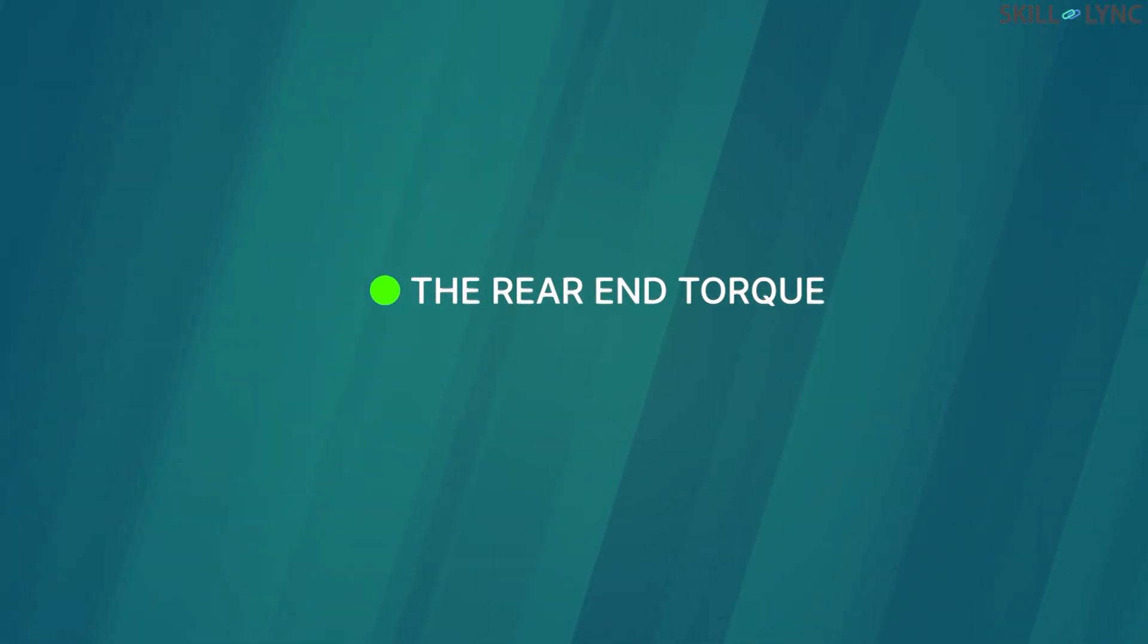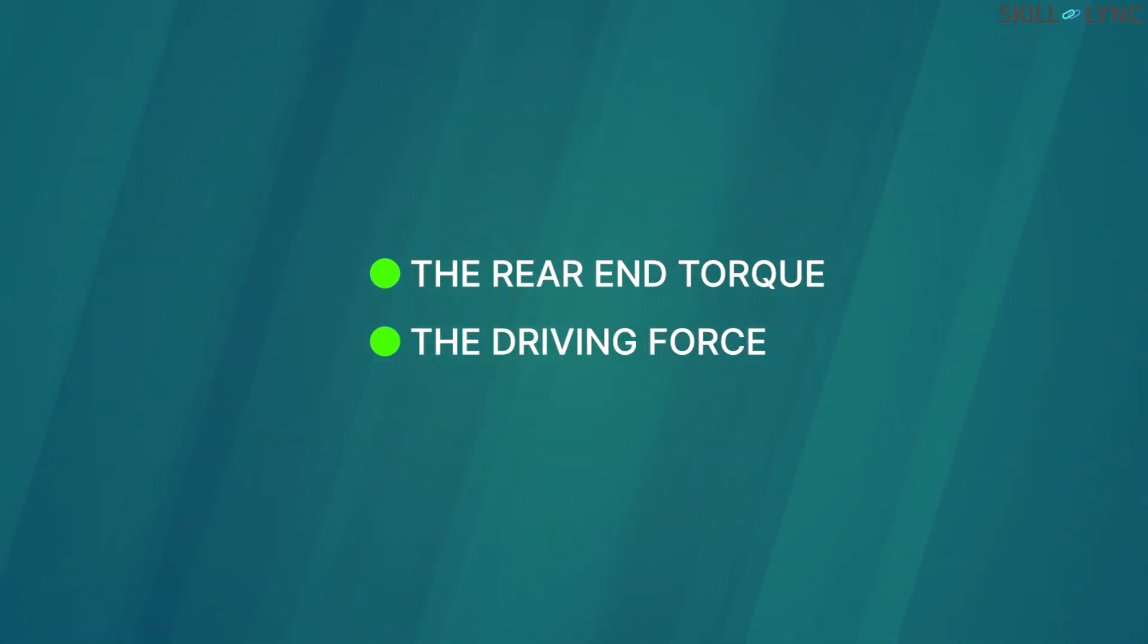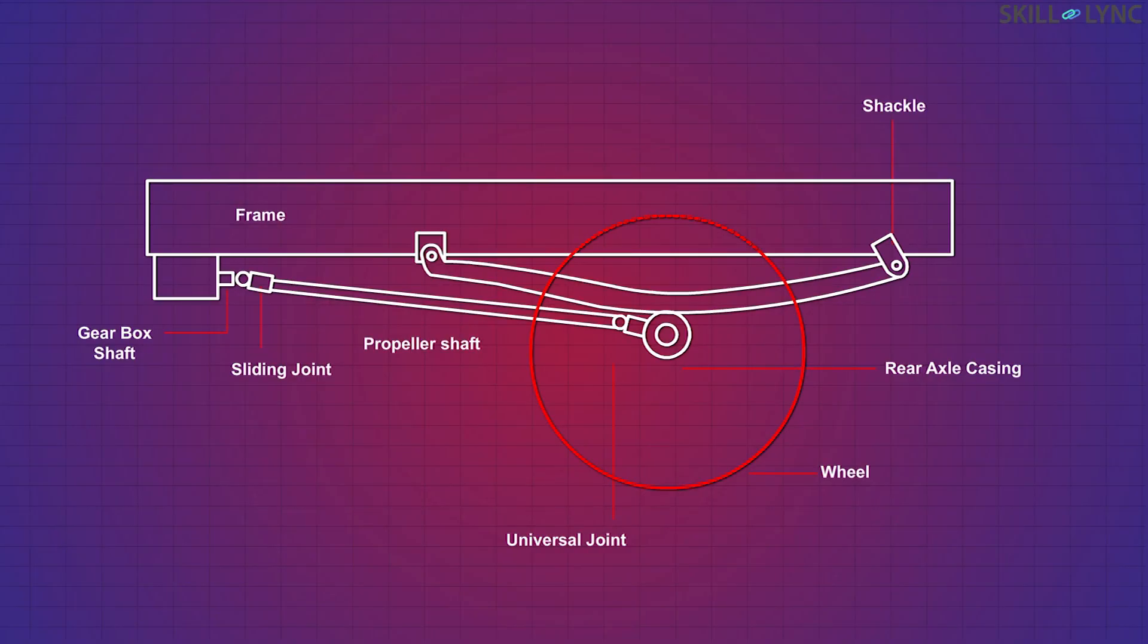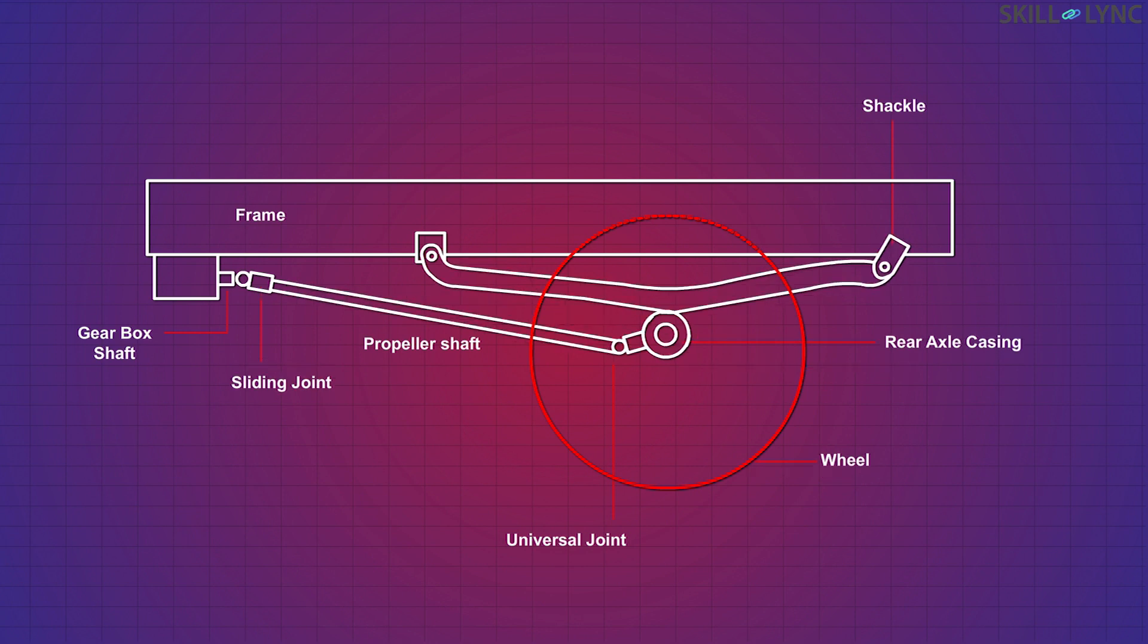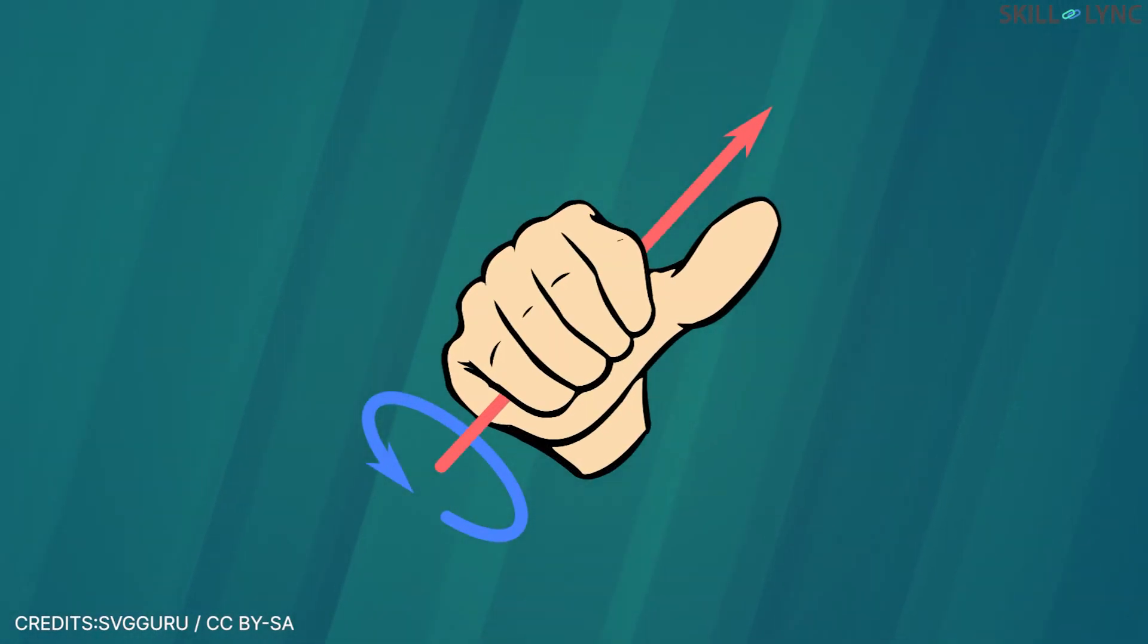When the torque acts, the leaf springs tend to bend as shown here, because the torque acts in the clockwise direction. Similarly, when the braking torque acts, the leaf springs tend to bend as shown in this picture, because the torque acts in the anti-clockwise direction. The ideology behind the change in direction is based upon the right-hand thumb rule.